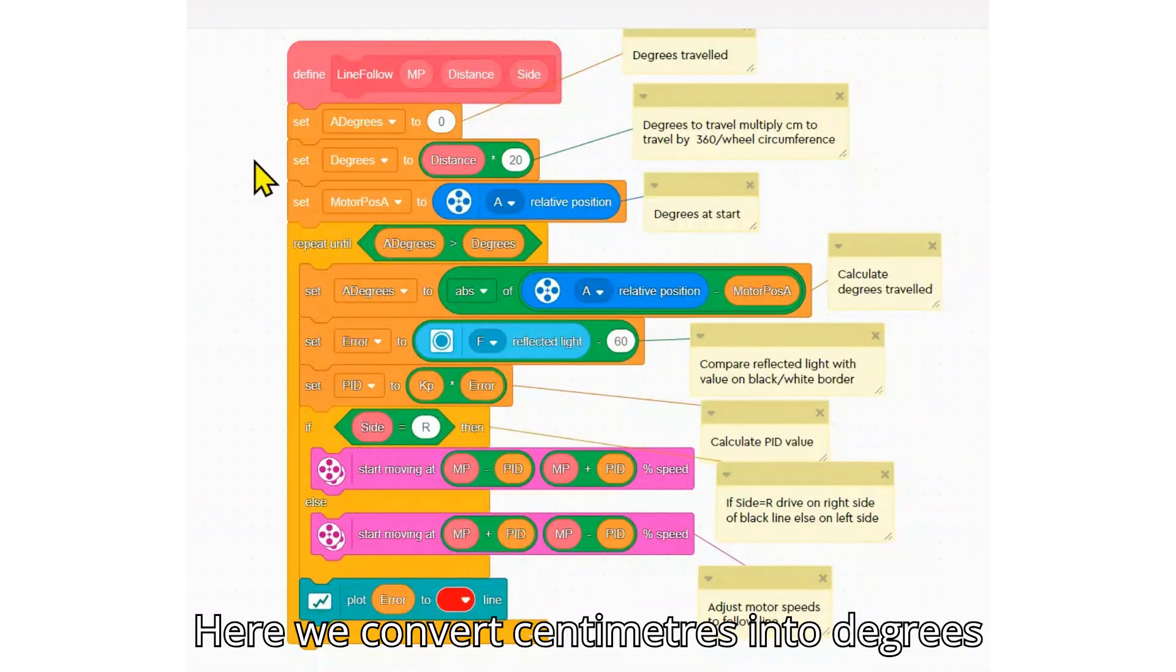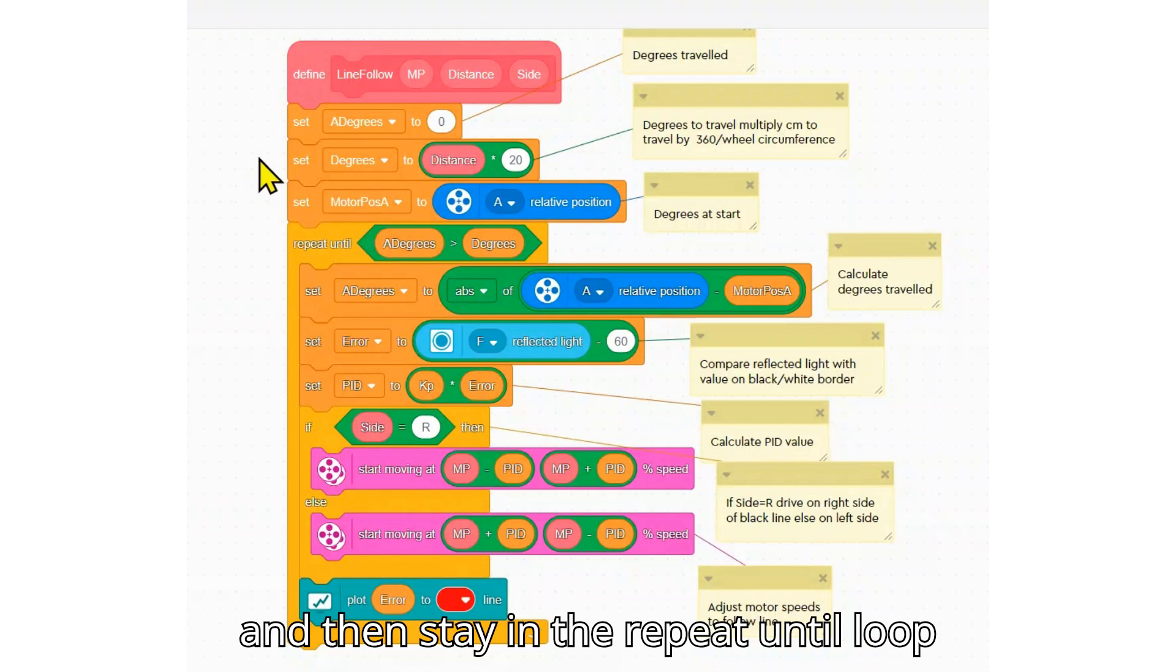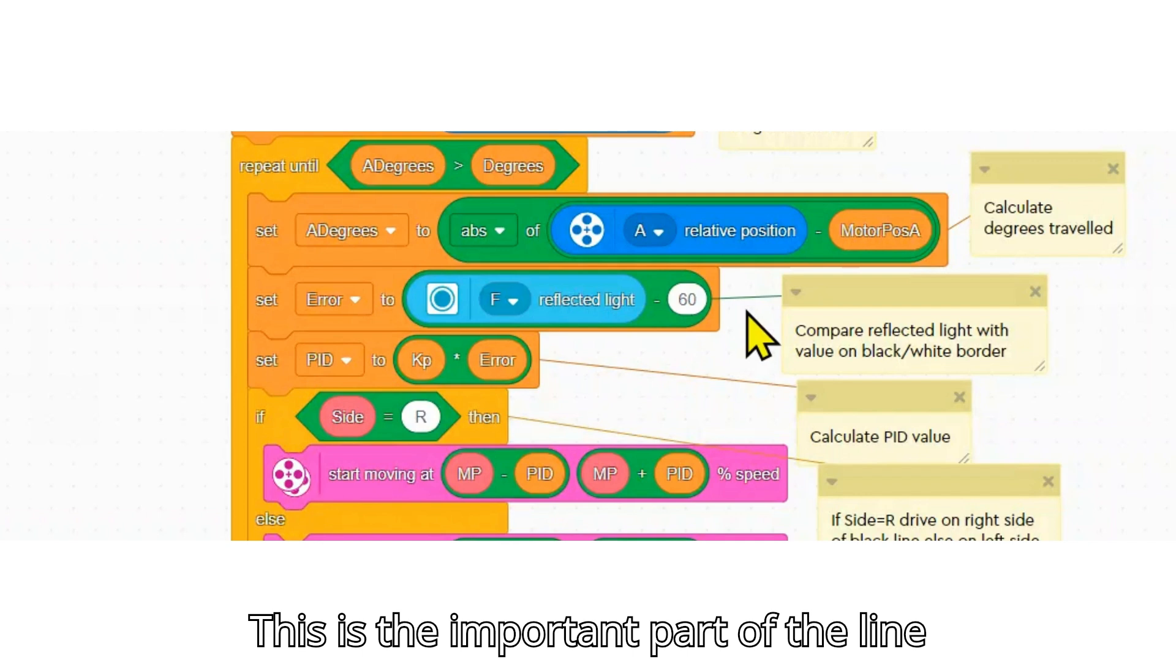Here we convert centimeters into degrees and then stay in the repeat until loop till the number of degrees is reached. This is the important part of the line follower.